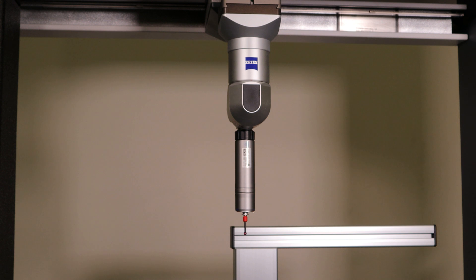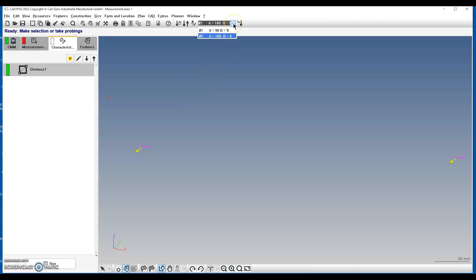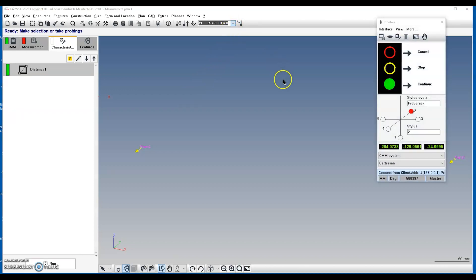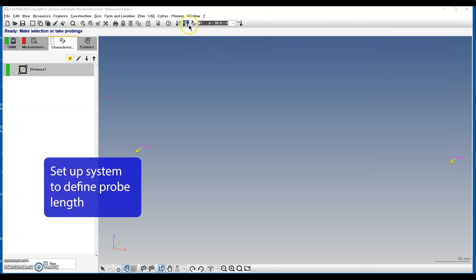Now make sure the stylus system you created, the first one, is active. That's the one at 90, 0. From there, go to the CNC stylus system change. You're going to define the probe length. At this point, click through the prompts.